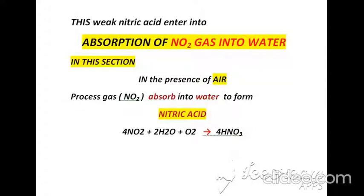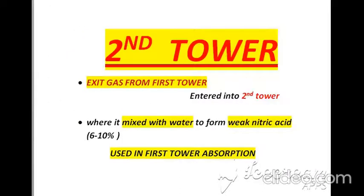In the absorption section, nitrogen dioxide is absorbed into water in the presence of air, producing nitric acid. In the second tower, gases exiting from the first tower are mixed again with water, producing a weak acid of concentration 6 to 10%, which then re-enters the first absorption tower.